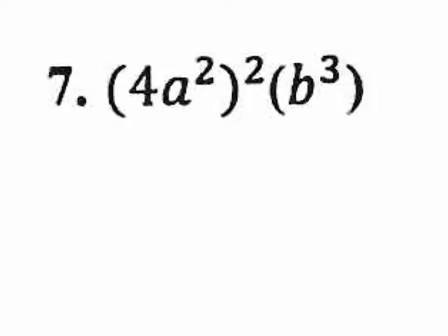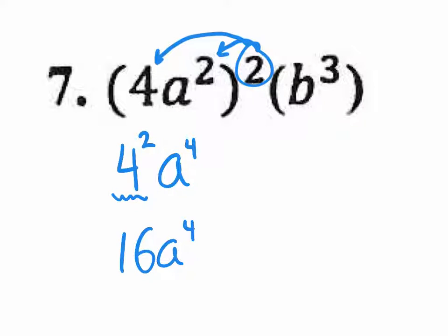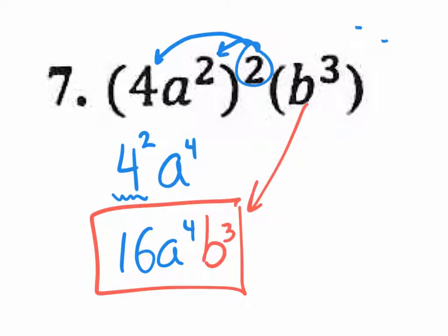Number 7: distribute that 2 to each term. For the 4: it's not 4 times 2 — it's 4 to the second power, which is 16. For a squared to the second: multiply exponents to get a to the fourth. There's nothing to distribute to b to the third, so just bring it down. Final answer: 16a to the fourth, b to the third.